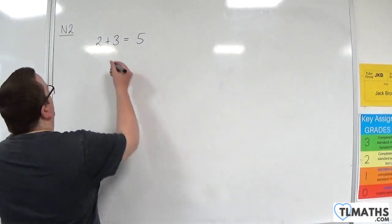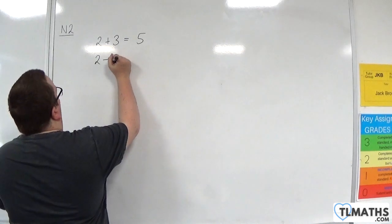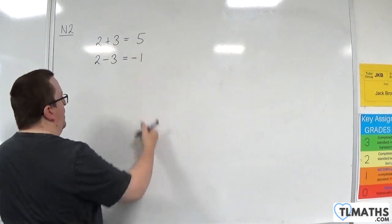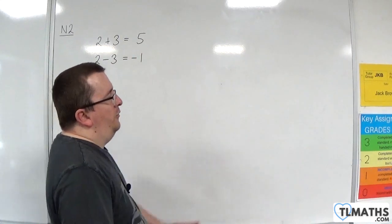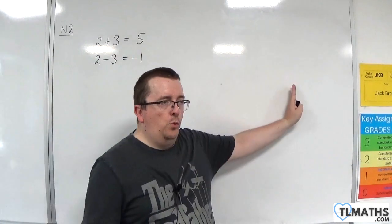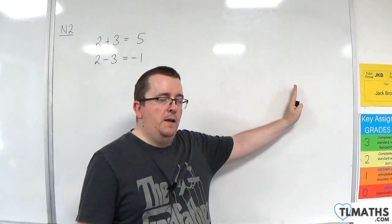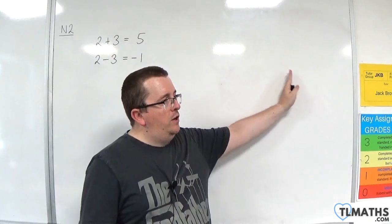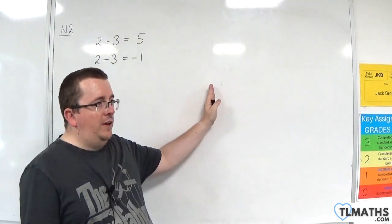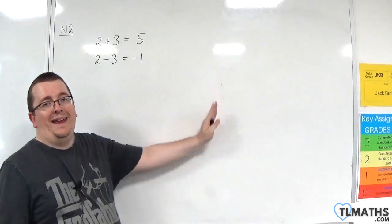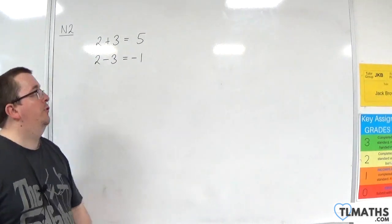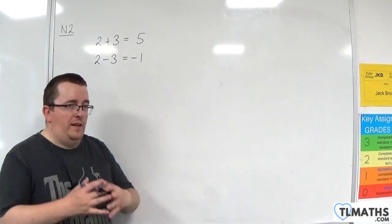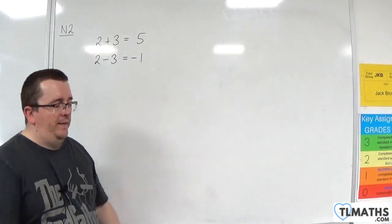We also know that 2 take away 3 is going to be minus 1. So if you're at 2 on a number line and you take away 3, you go 1, 2, 3 to the left, and you end up at minus 1.